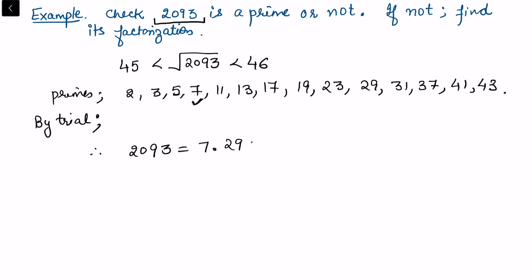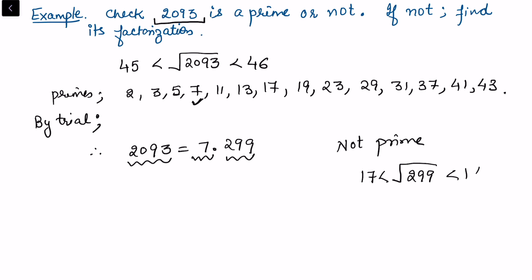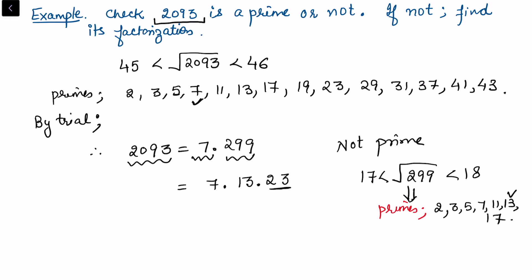We find 2093 = 7 × 299. Since we found two factors strictly greater than 1 and strictly less than 2093, it is certainly not prime. Now factorize 299: √299 lies between 17 and 18, so check primes ≤ 17: that is 2, 3, 5, 7, 11, 13, and 17. We find 299 is divisible by 13, giving 13 × 23. Since 23 is prime, the complete prime factorization of 2093 is 7 × 13 × 23.